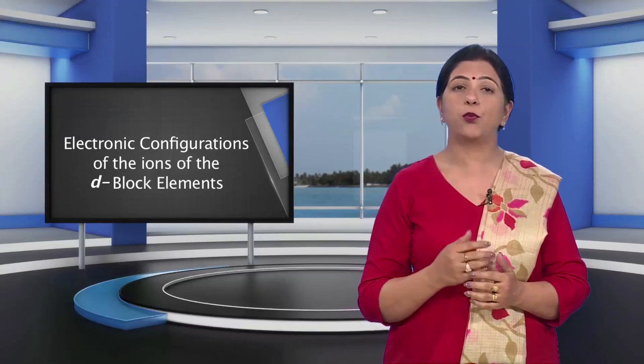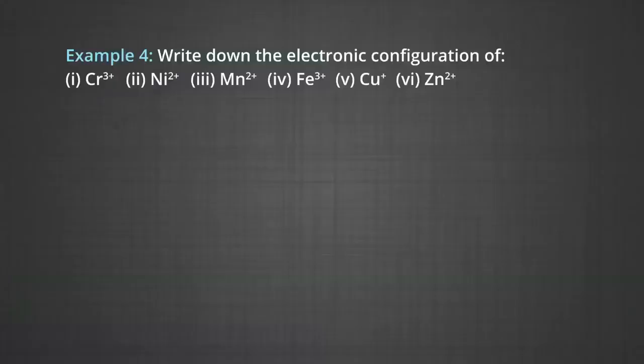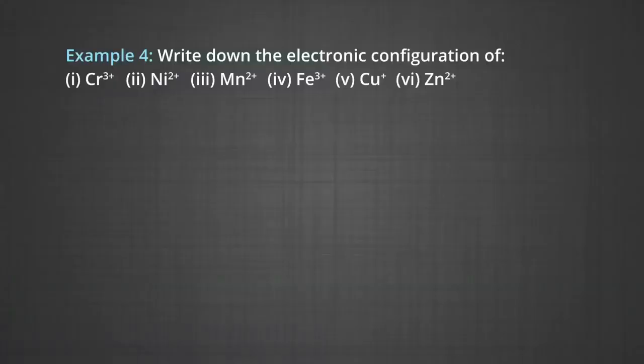Therefore, these elements do not possess the characteristic properties of the transition elements and are hence generally not regarded as transition elements. Next example, which is very important: write down the electronic configuration of Cr³⁺, Ni²⁺, Mn²⁺, Fe³⁺ (ferric ion), Cu⁺ (cuprous ion) and Zn²⁺.